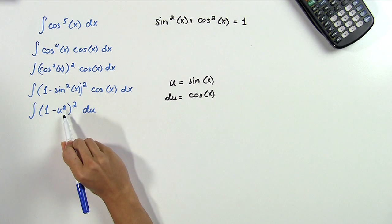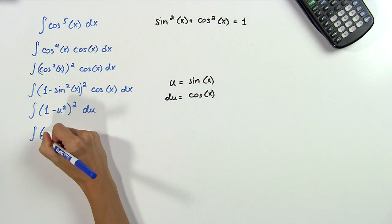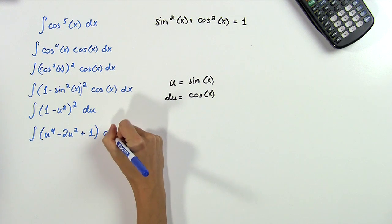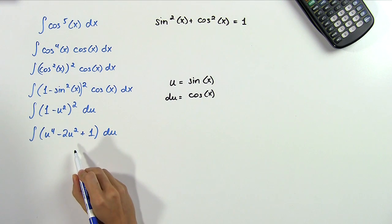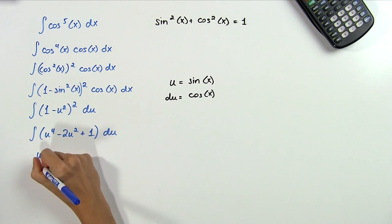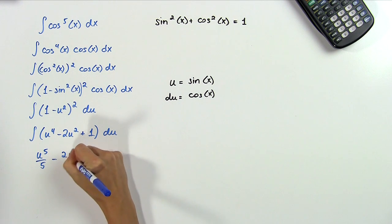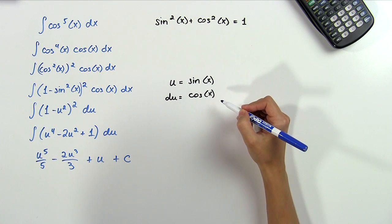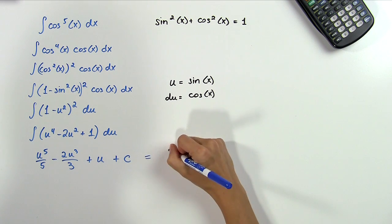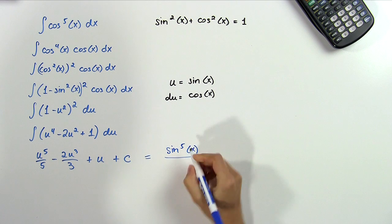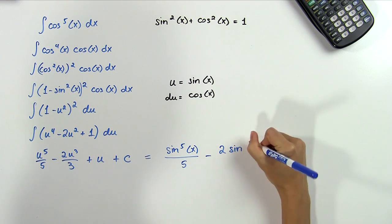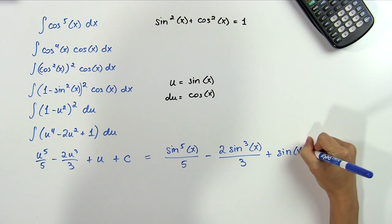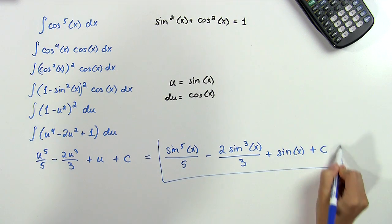Next we can go ahead and expand these parentheses to make it easier to integrate. And that will give us the integral of u to the fourth minus 2u squared plus 1 du. We can finally integrate this term by term and we get u to the fifth over 5 minus 2u cubed over 3 plus u plus c. Our last step is to substitute sine of x back in for u. So we get sine to the fifth of x over 5 minus 2 sine cubed x over 3 plus sine of x plus c. And that's what we get as the answer to our integral.